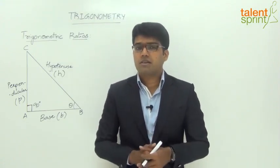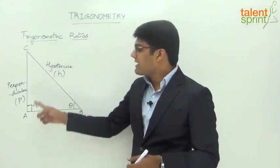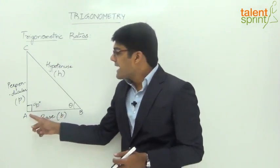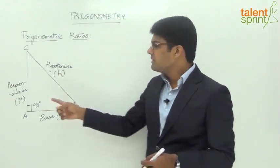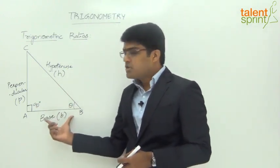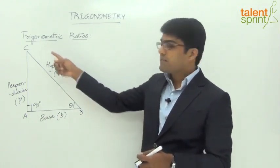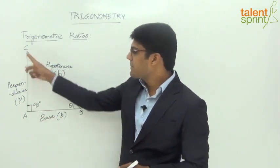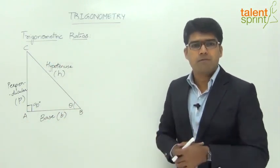Here we have a right angle triangle ABC which has a right angle at vertex A. The side opposite to the right angle is known as hypotenuse, denoted by h. The side opposite to the right angle A is hypotenuse h, and the base of the triangle is denoted by b — so AB is the base and BC is the hypotenuse. The perpendicular line to the base is denoted by p, so AC is the perpendicular, AB is the base, and BC is the hypotenuse.